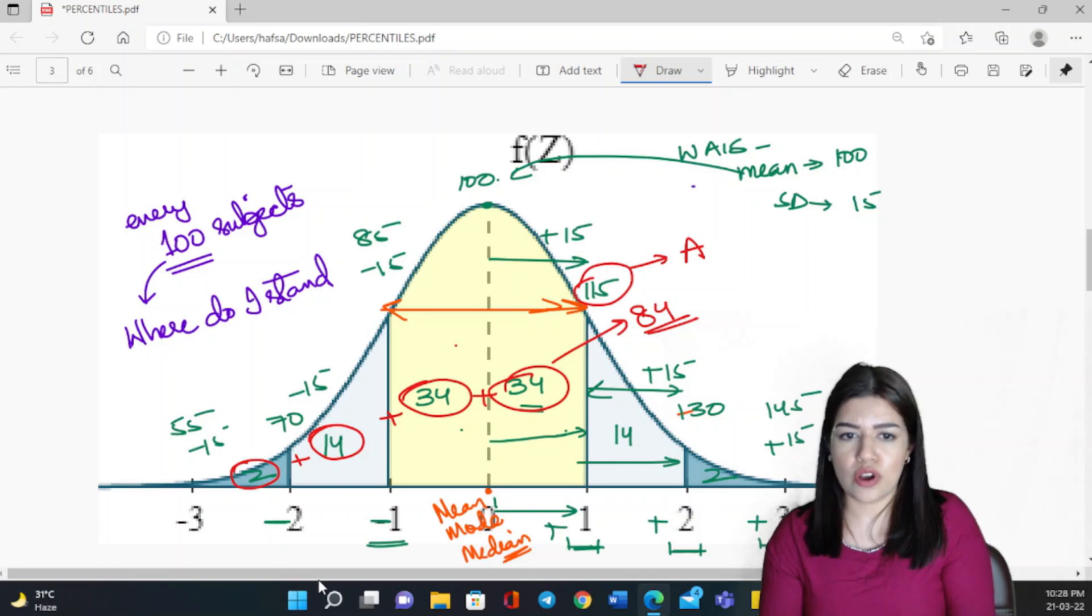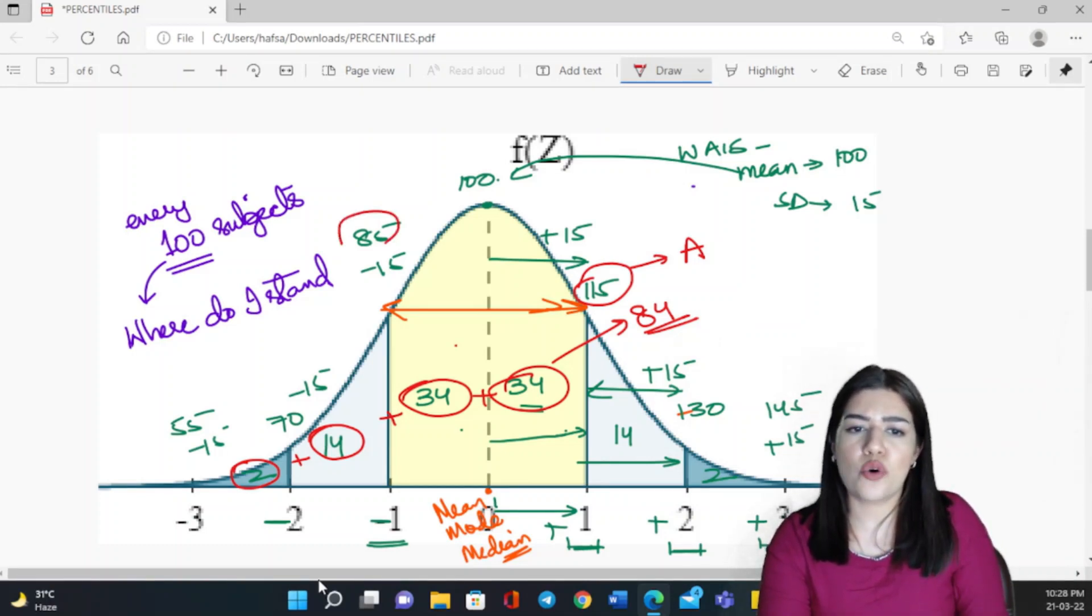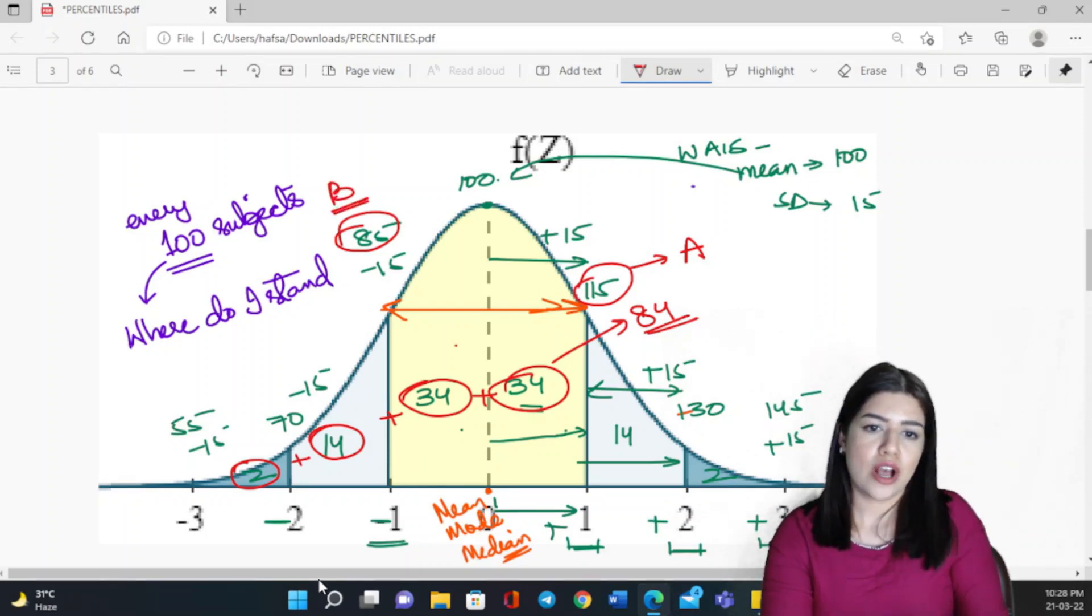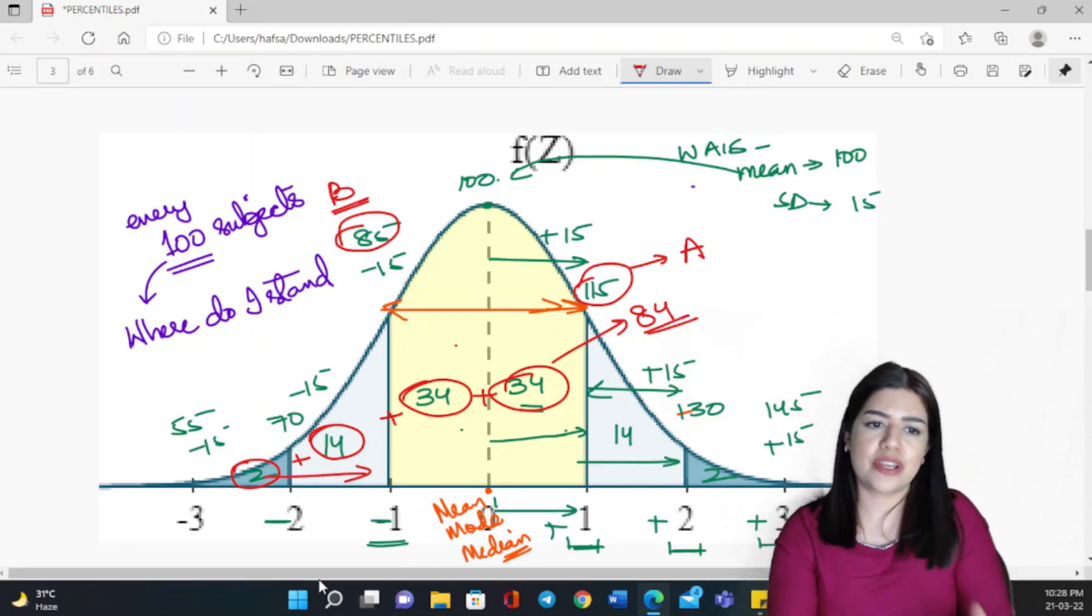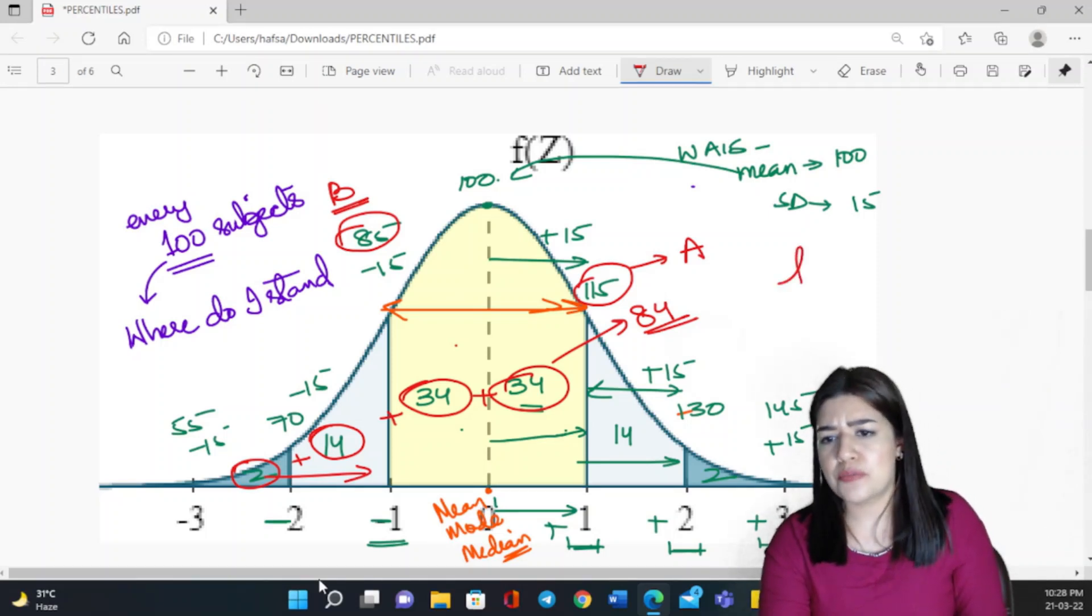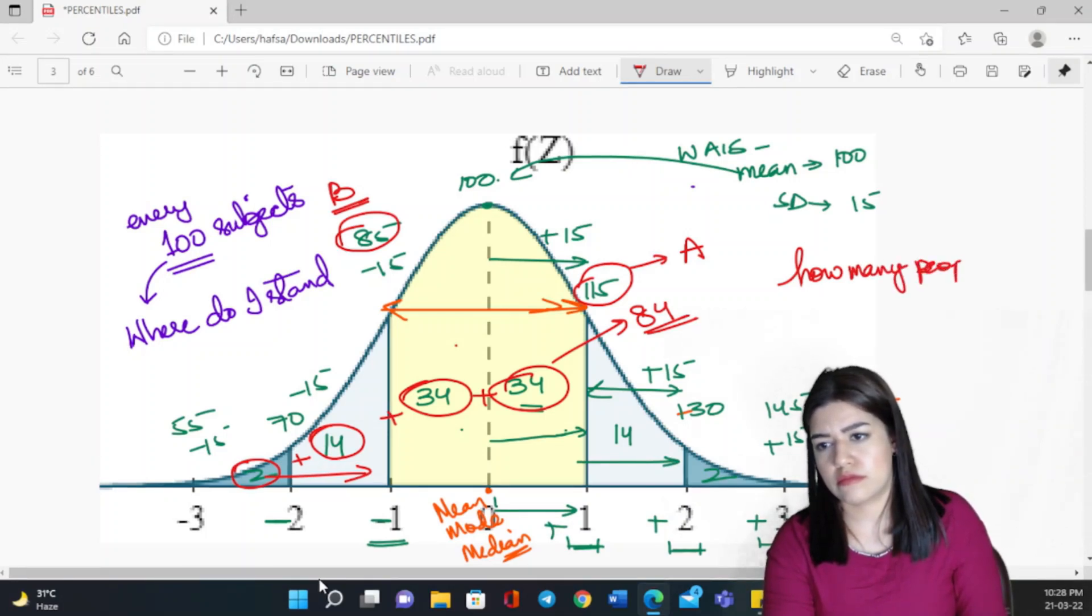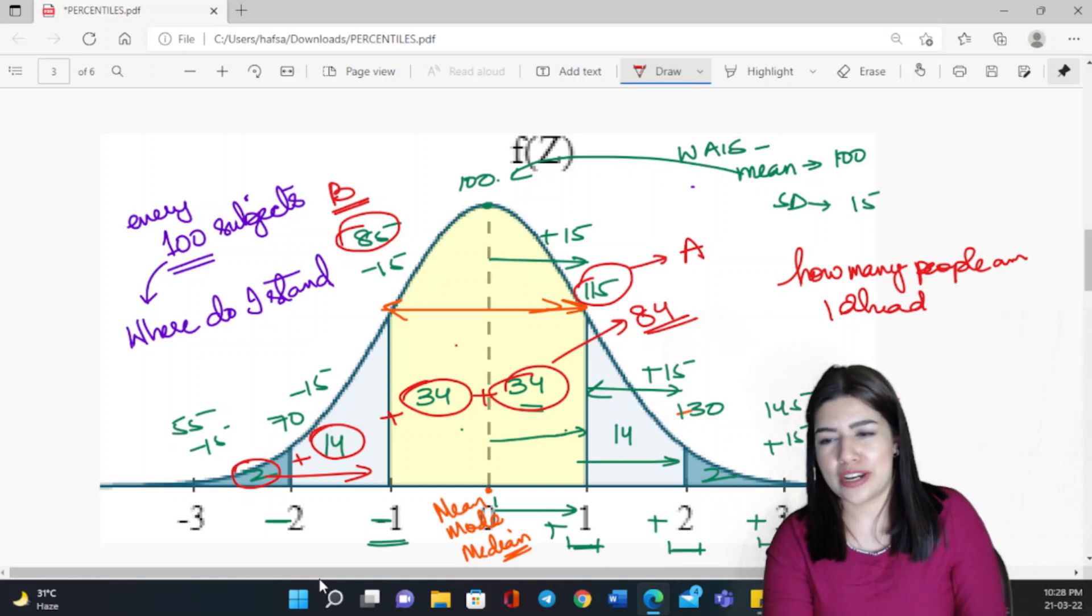And naturally, if I were to say the score of 85, let's say B is a person who has scored 85, where does B stand? B actually is only about 16 people for every hundred, because percentile is nothing but how many people am I ahead of out of every hundred in the sample.